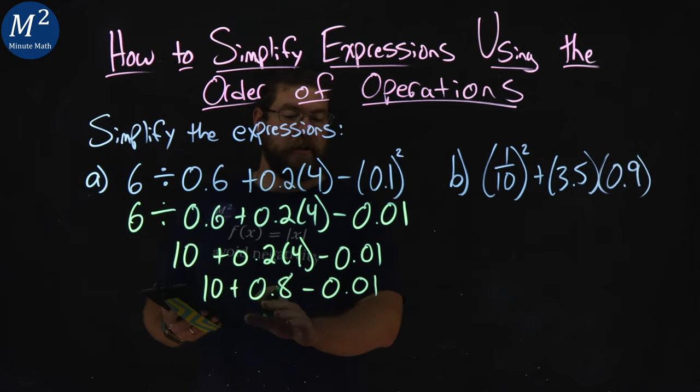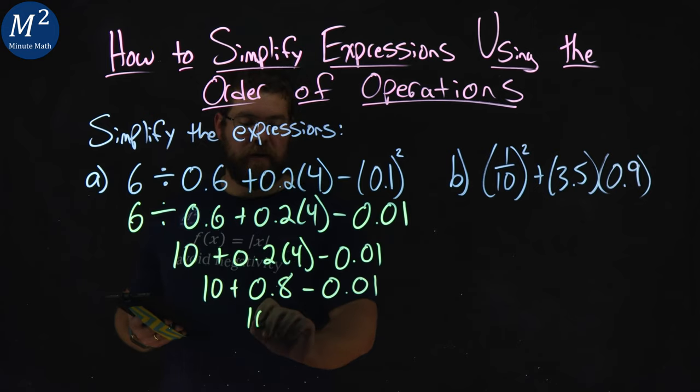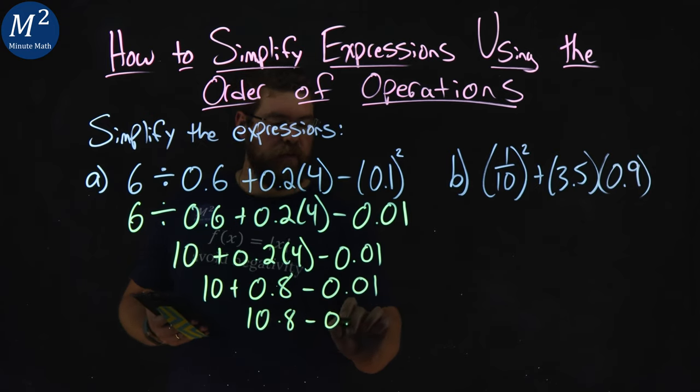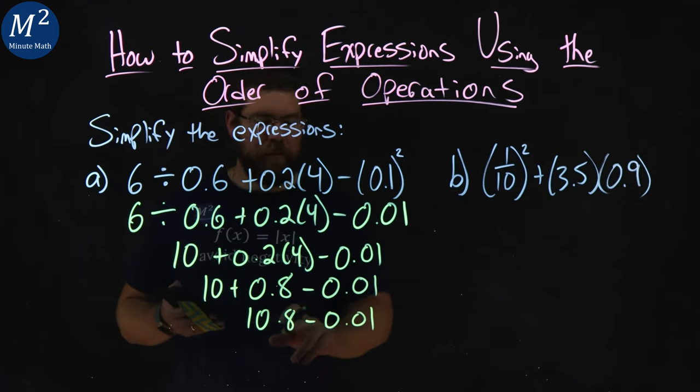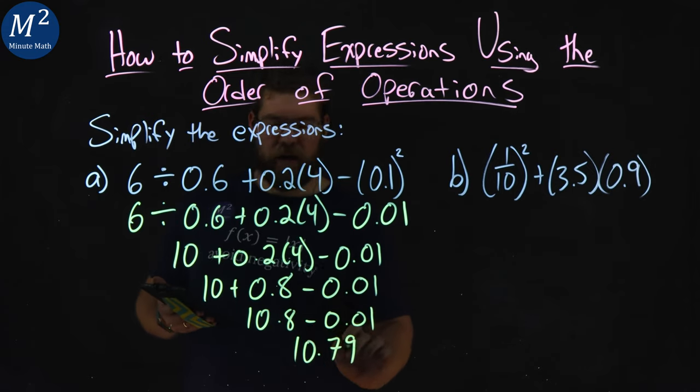Now, we read left to right with addition and subtraction that's left over. 10 plus 0.8 is 10.8 minus 0.01, and 10.8 minus 0.01 is 10.79.